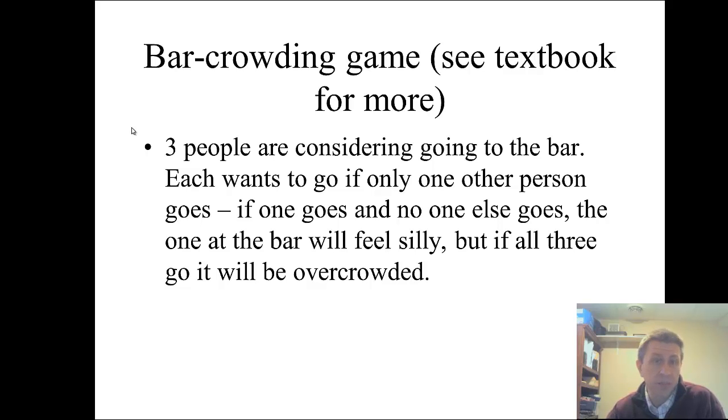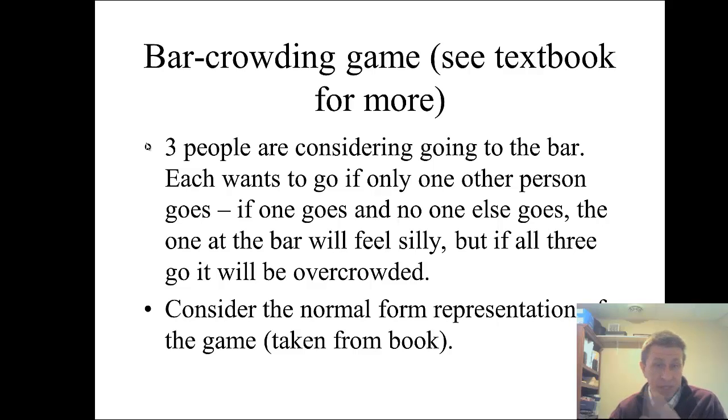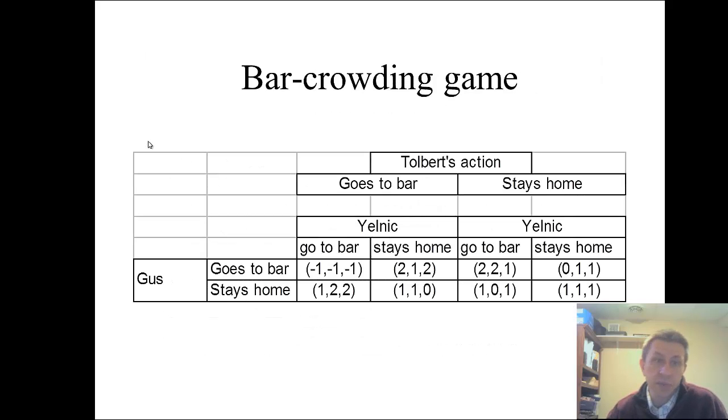So how is this game going to look? Well, there's a payoff matrix that we're going to look to in a moment. The normal form representation of the game taken from the book. So this is an example from the book. I don't think they use the names Gus, Tolbert, and Jelnick in the book. But how is this game different from before? Well, as you can see, there's eight outcomes now instead of what we've had before with the two by two.